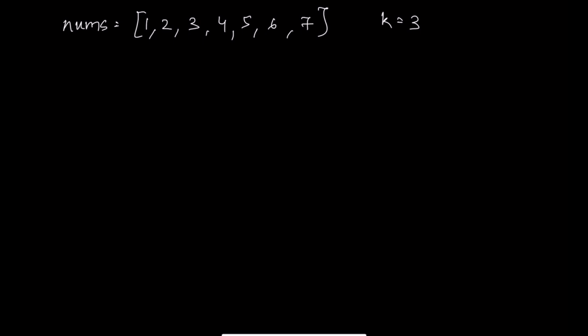We have to rotate the array to the right by k steps where k is non-negative. First, we will find the actual number of steps, that is k equals k modulo the length of the array. We do the modulo operation because suppose our k value is greater than the length of the array, that is the reason why we find the modulo operation and we find the actual number of steps that are to be taken.